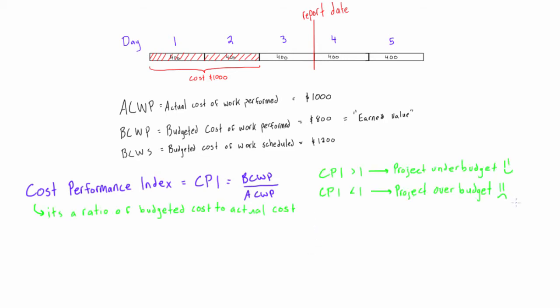Then we have the cost variance, which is the difference between a budgeted cost and the actual cost. If we find that the cost variance is a negative value, then the project is over budget and that's not a good thing. And if we find that it's a positive value, then the project is under budget and it's a good thing.